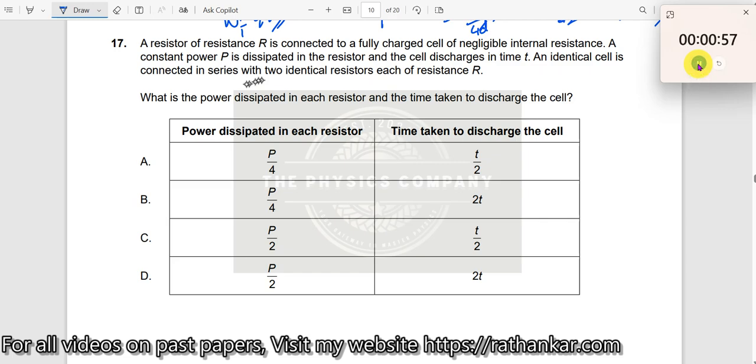Question number 17: a resistance of resistance R is connected to a fully charged cell of negligible internal resistance.